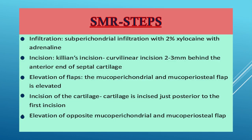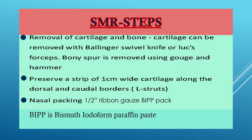After the infiltration, the incision is Killian's incision — a curvilinear incision two to three millimeters behind the end of septal cartilage. Then we elevate the mucoperichondrial and mucoperiosteal flaps on both sides. The cartilage is incised just posterior to the first incision, and then elevation of the opposite mucoperichondrial and mucoperiosteal flap is taken. Removal of cartilage and bone is carried out with a Ballinger swivel knife or Luc's forceps. Bone spurs are removed using a gouge and hammer. We preserve a strip of one centimeter wide cartilage along the dorsal and caudal borders — we call it the L-strut.